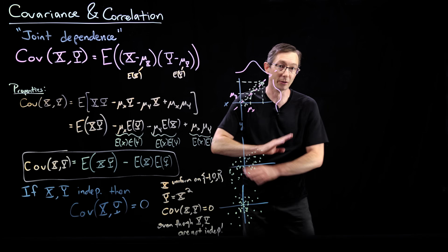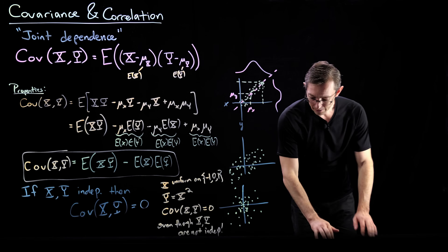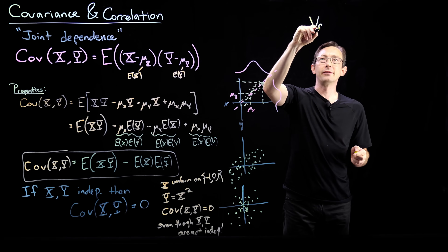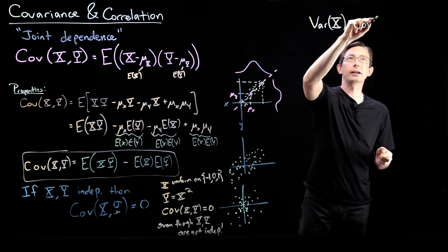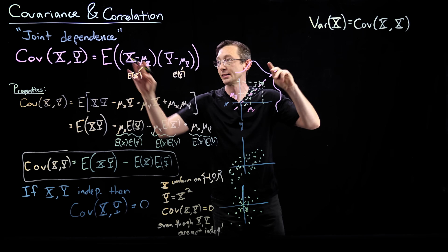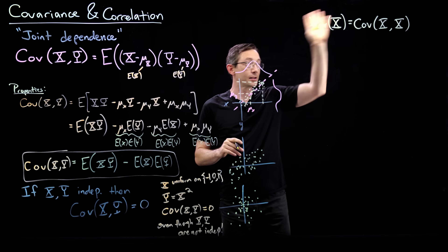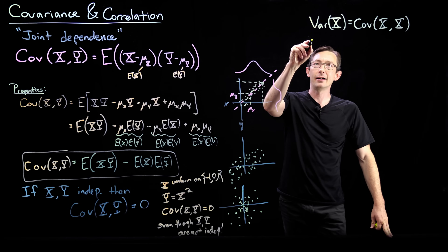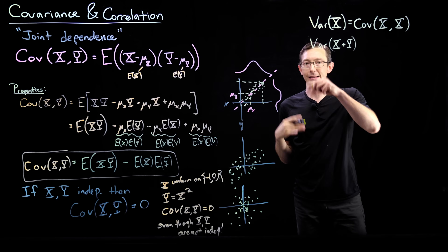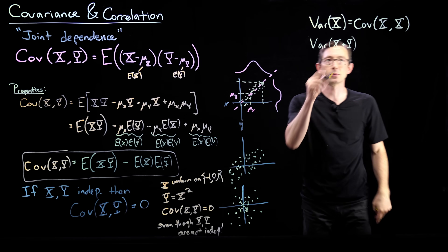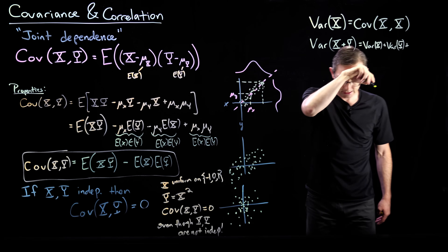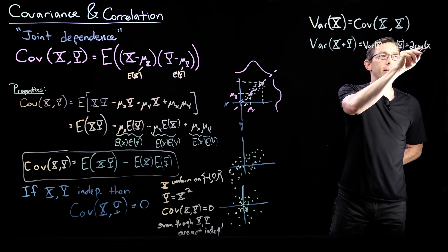Other properties: the variance of x equals the covariance of x with itself — Var(x) = Cov(x, x). Plugging x in both places gives the expectation of (x − mean)² which is the definition of variance. We also have that the variance of z = x + y equals Var(x) + Var(y) + 2·Cov(x, y).